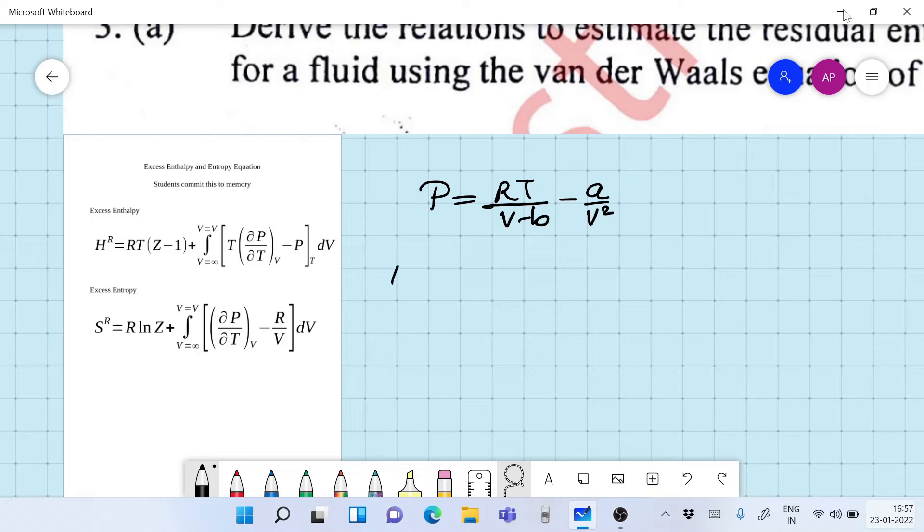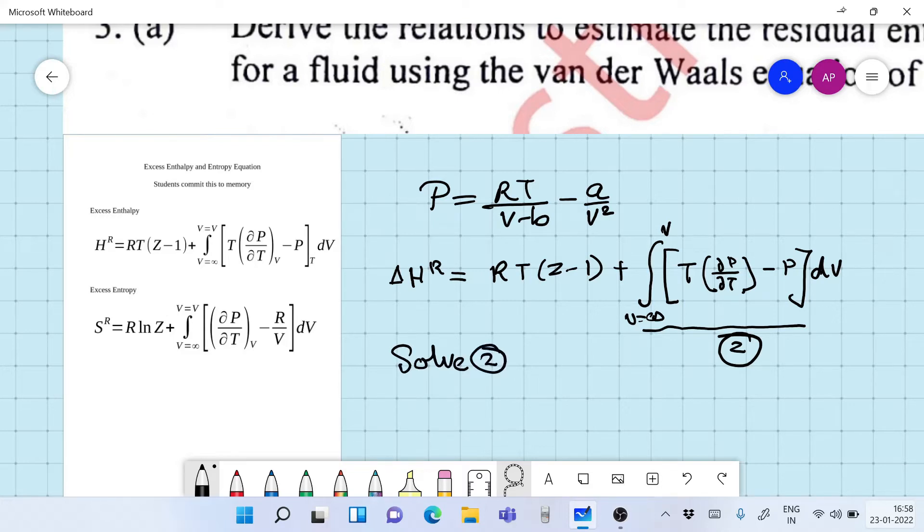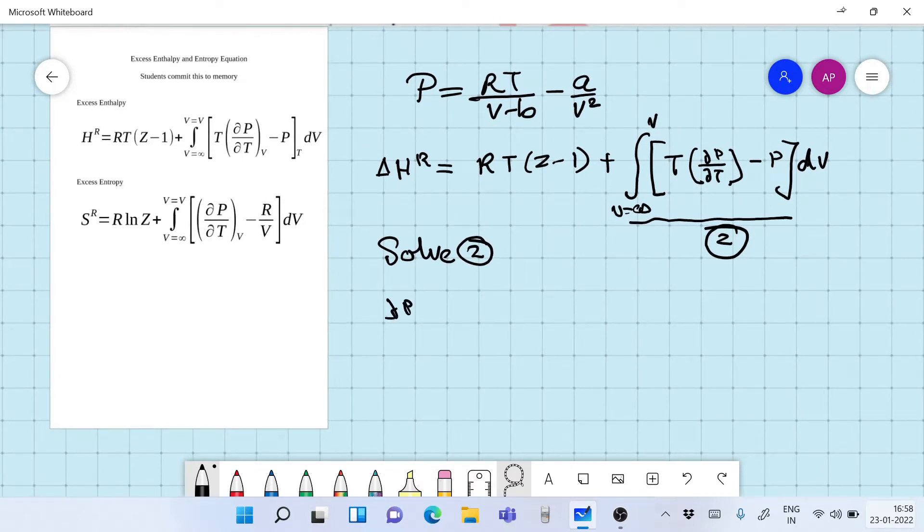Now as you can see, in the formula for residual enthalpy we require RT upon Z minus 1 plus integral V infinity to V, and what we require from the Van der Waals equation is ∂P by ∂T minus P dV. The integral is something what needs to be solved. So let's write this as equation 2 and let's only solve it. So solving it, we get first of all let's calculate ∂P by ∂T at constant volume V. Now this would be required in both residual entropy as well as residual enthalpy.